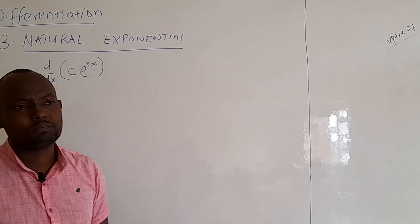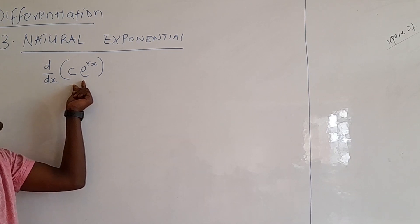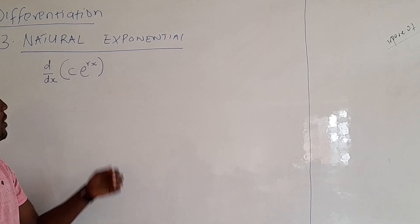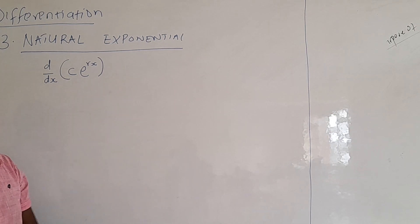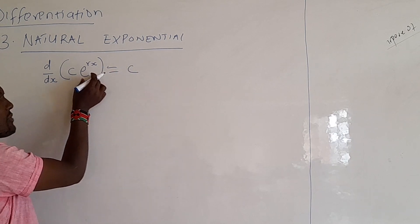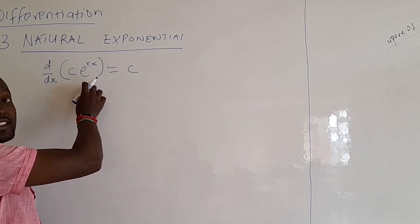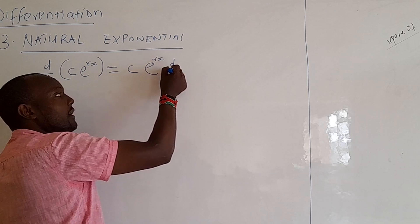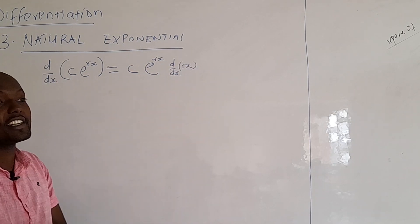This is very simple. We are assuming we are differentiating a constant and then a natural exponential to power rx. Remember our c is a constant, so we treat that one the way it is. When we differentiate an exponential, it remains the way it is, then you only differentiate the power.